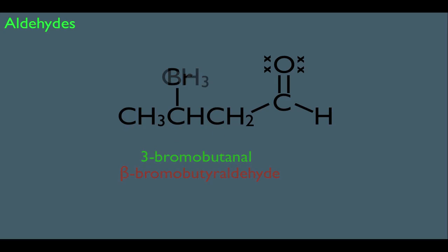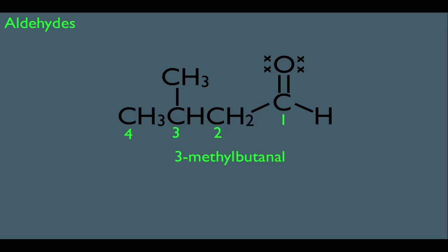Here's another example — again four carbons long with the carbonyl as priority carbon 1. The parent name is butanal, with a methyl on carbon 3, so we call it 3-methylbutanal. But notice the common name for this would be isovaleraldehyde. We're not using beta-methyl to name it because the entire structure has its own common name. Watch out for things like that.